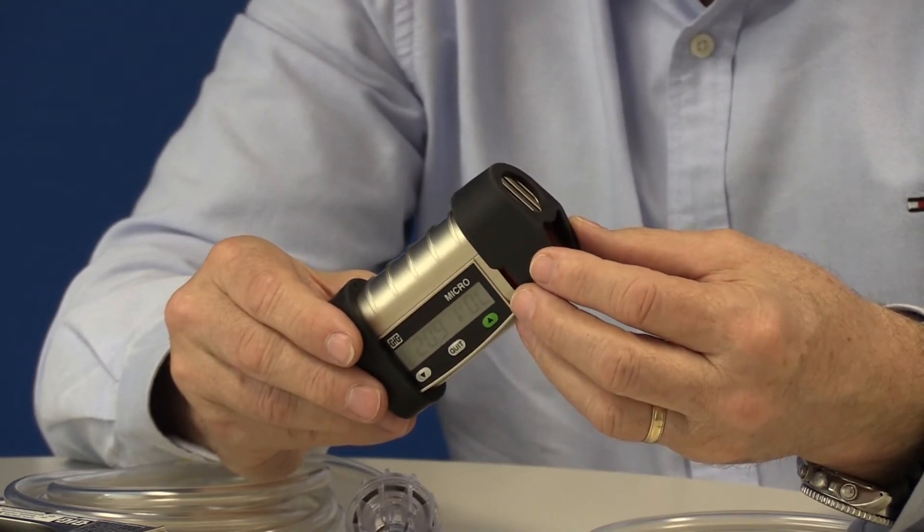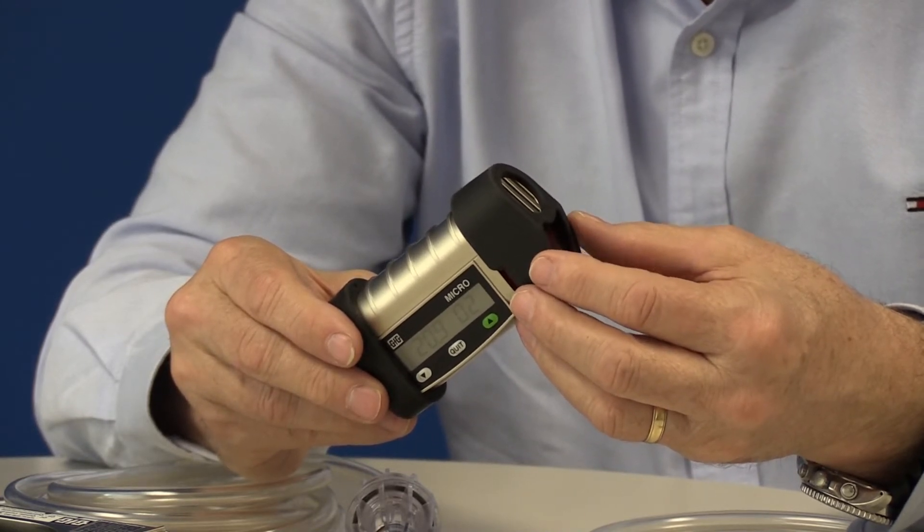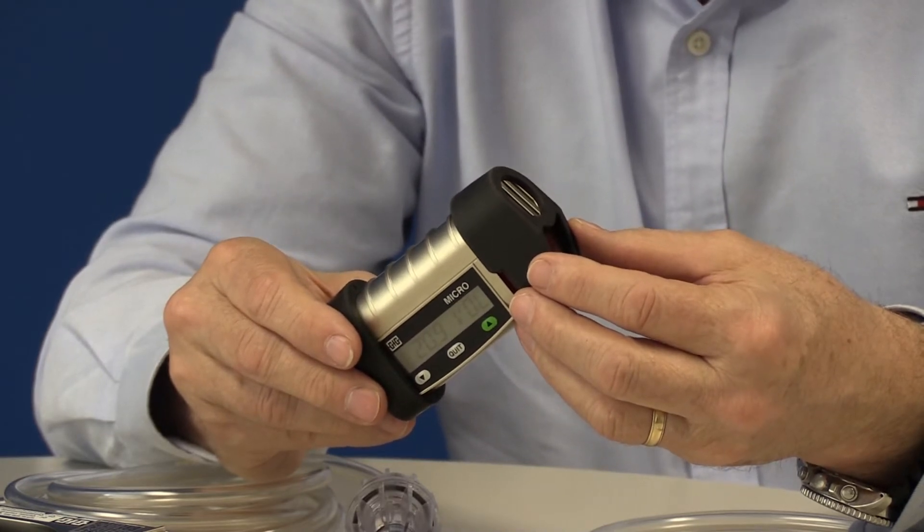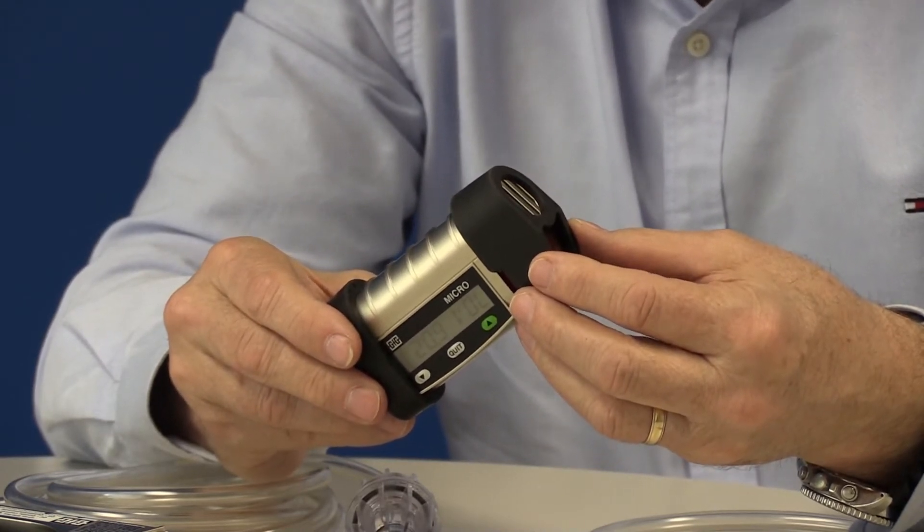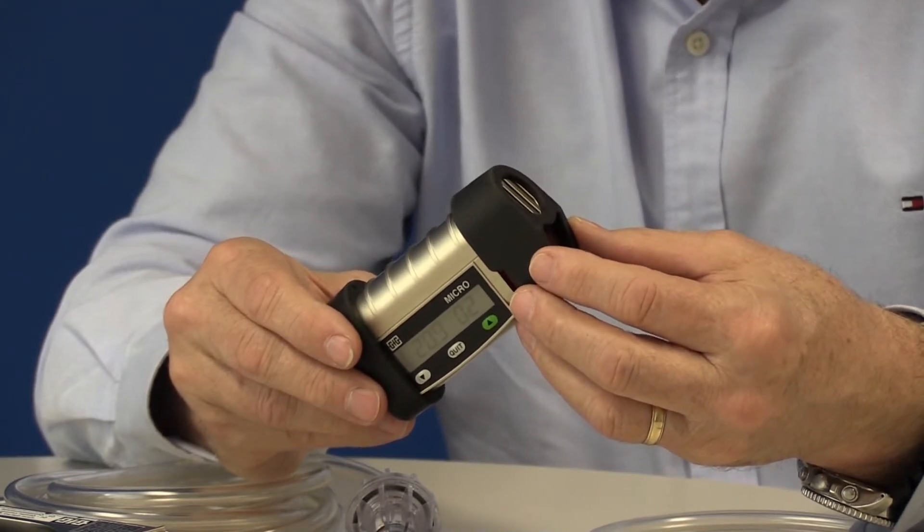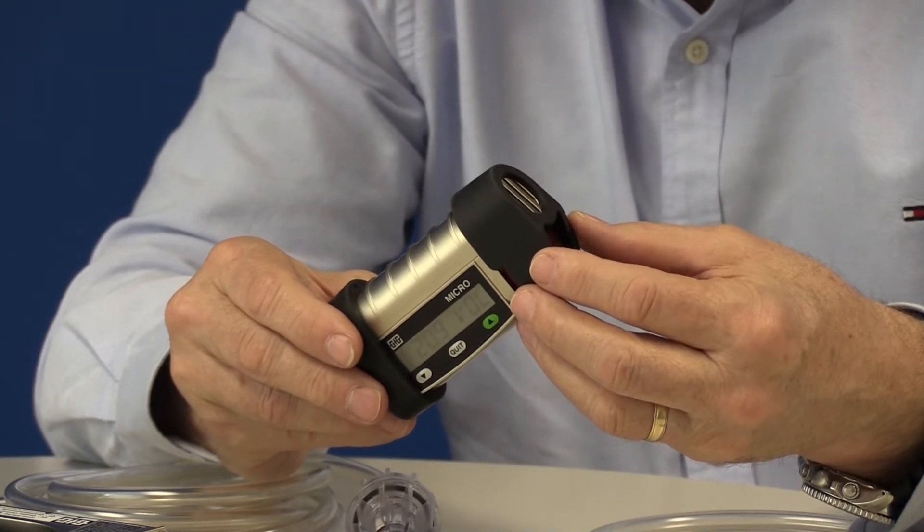So all you have to do to operate the instrument is make sure it's turned on and take it into the area where you want to measure the gas. That makes it very easy to simply wear the Micro Four gas detector or hold it in your hand or clip it into your shirt pocket. Very easy.